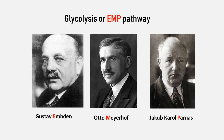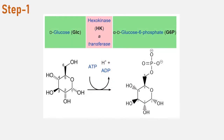Glycolysis begins with the phosphorylation of glucose by hexokinase to form glucose-6-phosphate. A kinase is a type of enzyme that adds a phosphate molecule to a substrate. This step uses one ATP, which is the donor of the phosphate group. In the liver, a specific isoform of hexokinase carries out this catalysis, known as glucokinase.